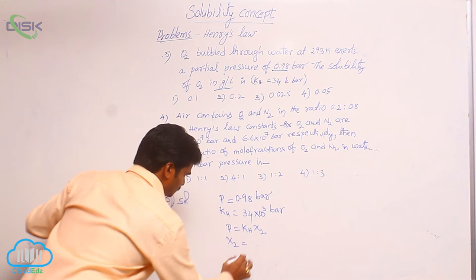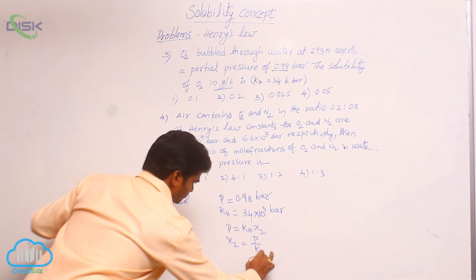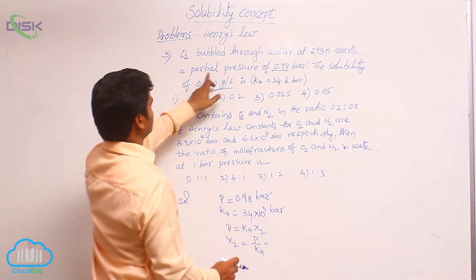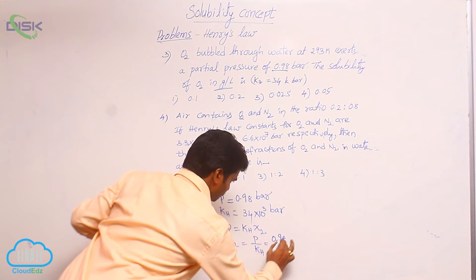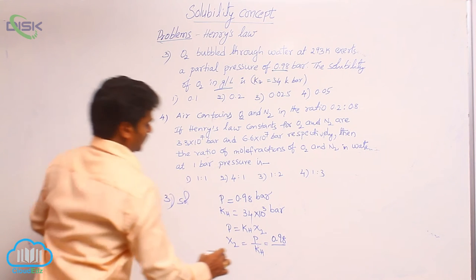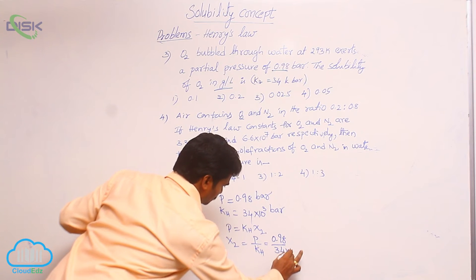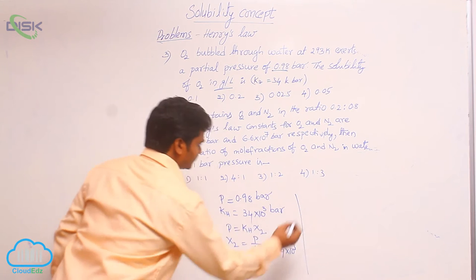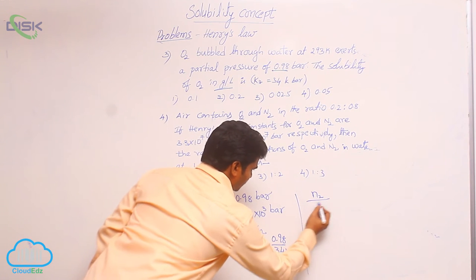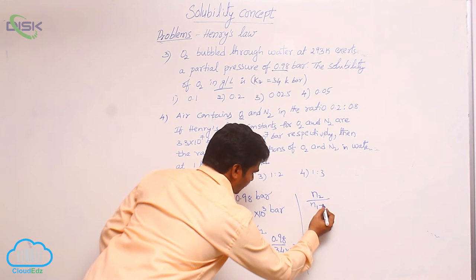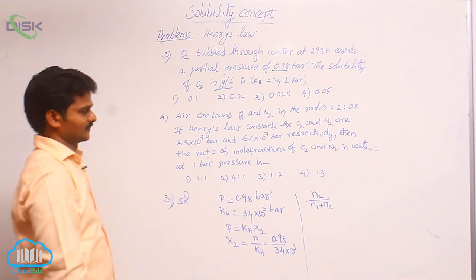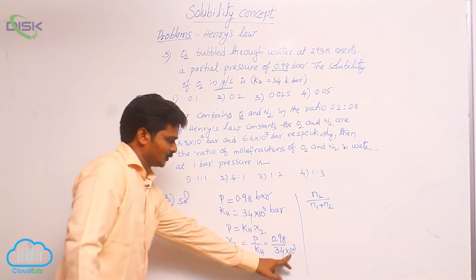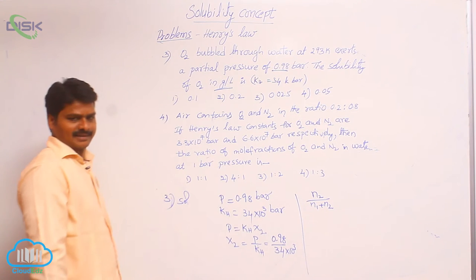That means x2 is equal to P by K_H. Partial pressure given is 0.98 bar, divided by K_H value 34 into 10 cube bar. This gives the mole fraction of solute. The mole fraction of solute is very small because 10 cube goes to the numerator, it becomes 10 power minus 3 — that is a very small value.